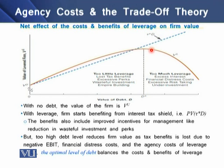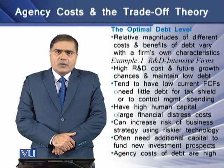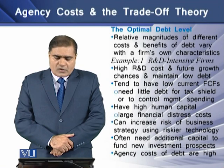We see that at the level D* — which is the optimal level of debt — the cost and benefits of leverage are balanced. This is the optimal level of debt.